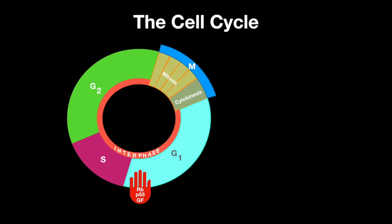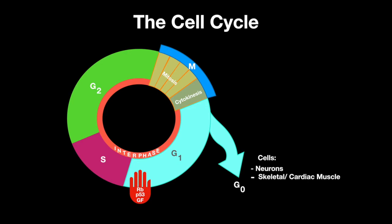Depending on the type of cell, it may remain in a phase called G0 permanently, where the cell never divides. Cells such as neurons, skeletal and cardiac muscle, and red blood cells are examples of permanent G0 cells.